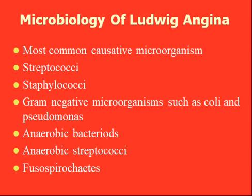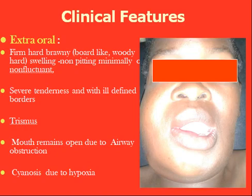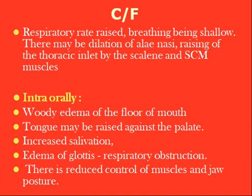Clinical features of Ludwig Angina: the patient looks toxic, very ill, and dehydrated, with marked pyrexia, anorexia, dysphagia, impaired speech, and hoarseness of voice. Locally there is firm, hard, brawny swelling that is woody and hard, non-pitting, and minimally fluctuant, with severe tenderness and ill-defined borders. Trismus is present. The mouth may remain open due to airway obstruction. Cyanosis due to hypoxia may occur. Respiratory rate is increased, breathing becomes shallow, there may be dilation of the alae nasi, and raising of the thoracic inlet by the scalene and sternocleidomastoid muscles.